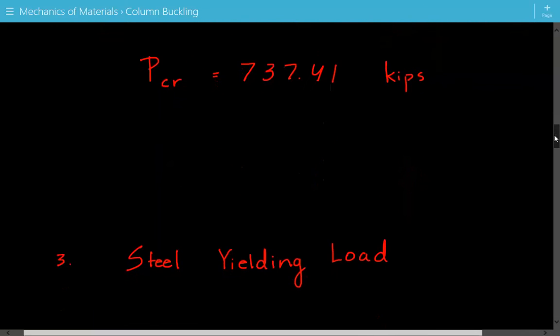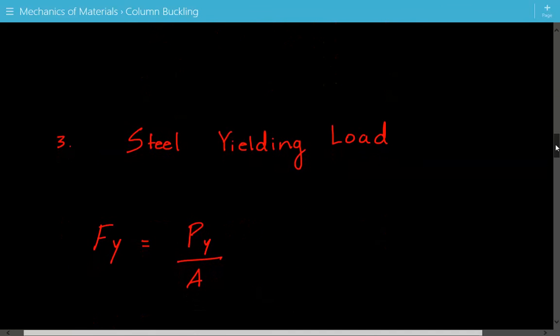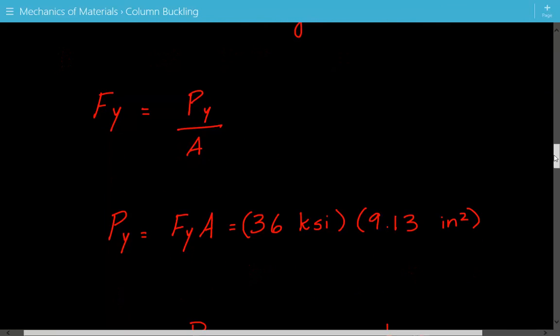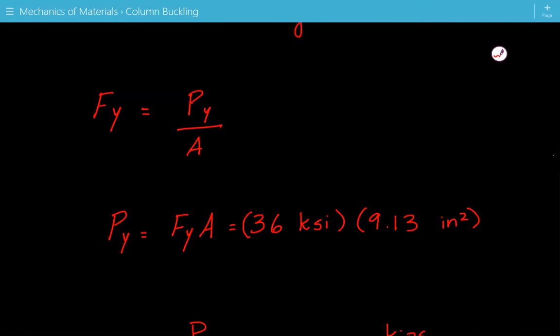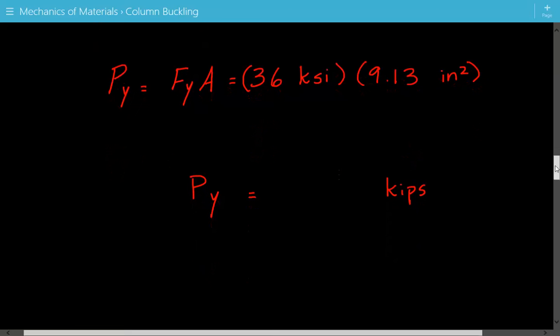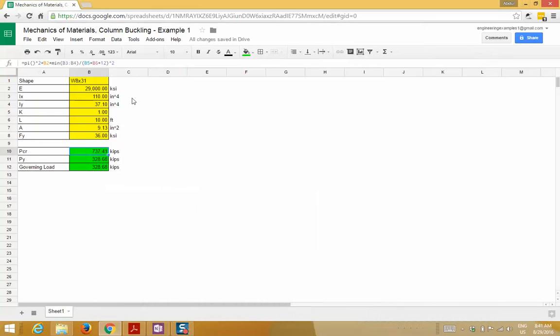After this, we're going to calculate the steel yielding load. This is the load that will cause the steel to yield in compression. The yield stress is equal to the yielding load divided by the cross-sectional area. We've rearranged the equation to solve for the yielding load: it's equal to the yield stress times the cross-sectional area. So 36 ksi times 9.13 inches squared gives us a yielding load equal to 328.68 kips.